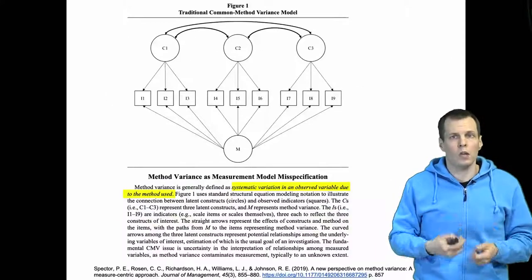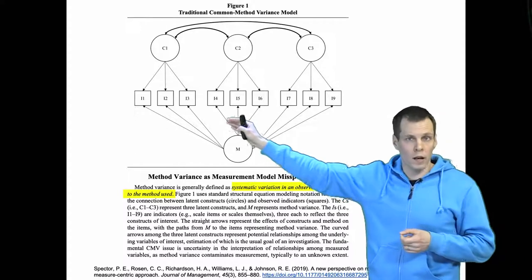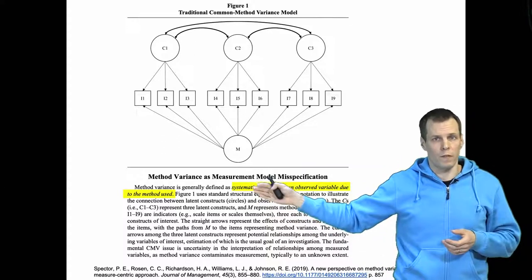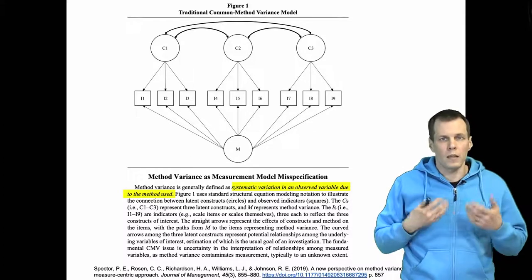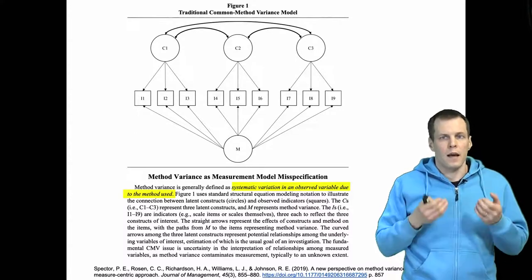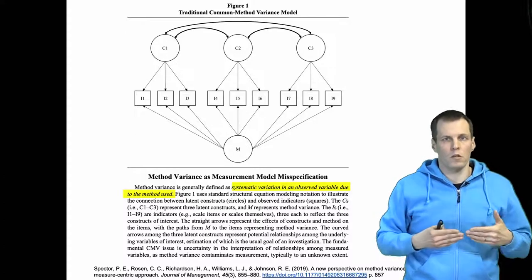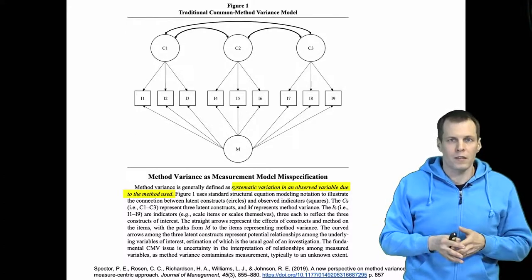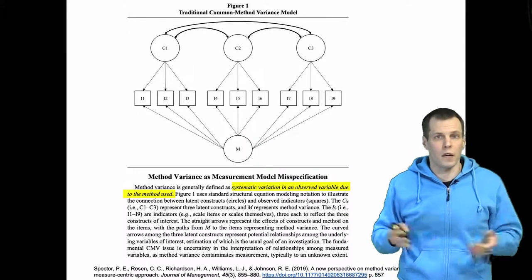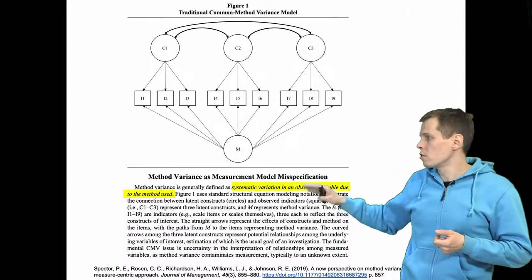Typically, statistical models of method variance use a framework where we assume that all the indicators depend linearly on the constructs being measured and also depend on a single source of method variance. This model, which is the basis of most of the techniques applied for dealing with or diagnosing the issue, has been criticized as not very realistic. It basically assumes there is one source of variation affecting all items. If you have things like priming effects — such as how you answer I4 affecting how you answer I5 — this kind of model would not capture that.